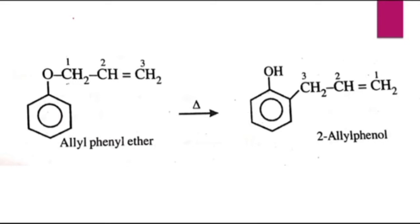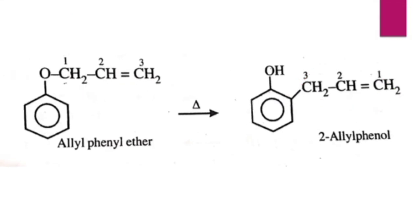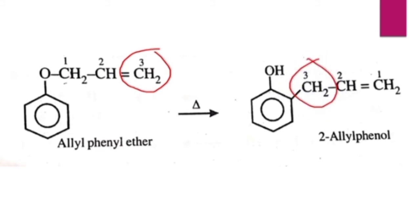A detailed study of the reaction shows that in Claisen rearrangement, the allyl group migrates invariably to the ortho position as long as the ortho positions are not substituted. This allyl group migrates to this ortho position. The second key feature is there is an inversion of the allyl group during rearrangement — the carbon atom 3 in the starting compound gets linked to the aromatic ring in the product.